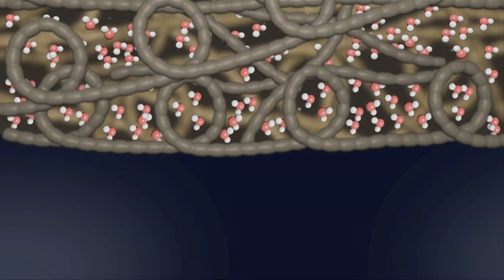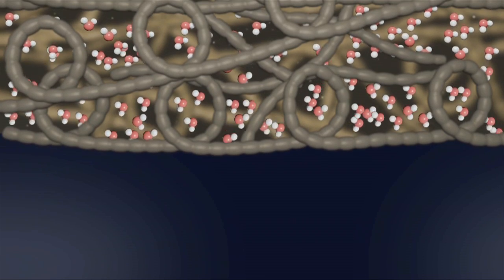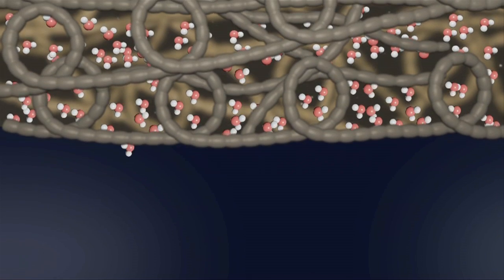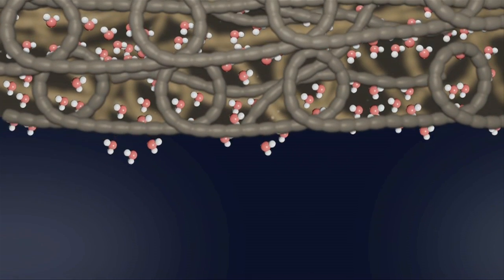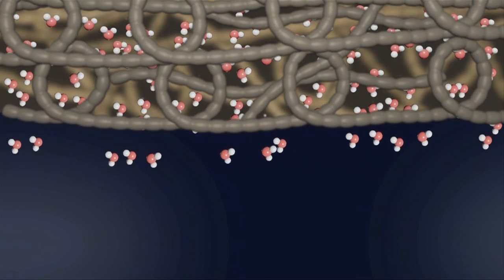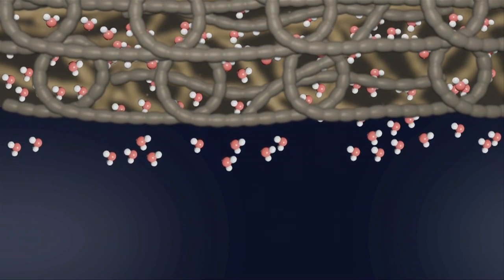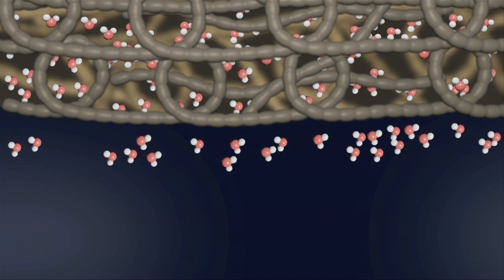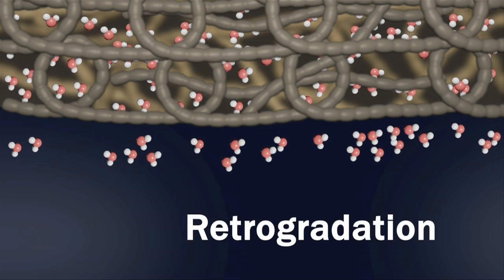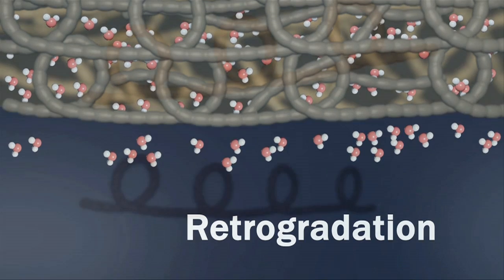As a starch-thickened solution begins to cool down, molecules move more slowly and get closer and closer together. Over time, the starches begin to reform starch-starch hydrogen bonds, firming the texture of the gel and displacing the water that was coating each starch molecule, which will then weep out of the gel. This process is called retrogradation.